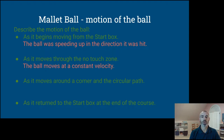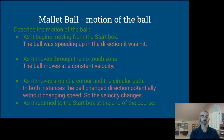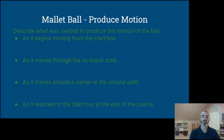As the ball moved around the corner of the circular path, in both instances the ball changed direction, potentially without changing speed. That means the velocity changed — speed could be constant, but velocity changes because direction changed. As it returned to the start-stop box, it slowed to a stop.